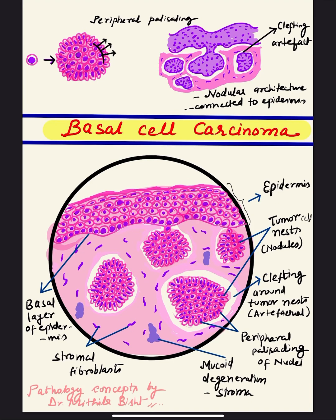Hello and welcome everyone. In this video I will teach you how to draw a histopathology diagram of basal cell carcinoma. In the previous video we already covered in detail the concept of basal cell carcinoma — it is the most common malignant tumor of the skin, arising from the basal layer of the epidermis and also from the follicular epithelium. Before drawing the diagram, we should know a few points beforehand.